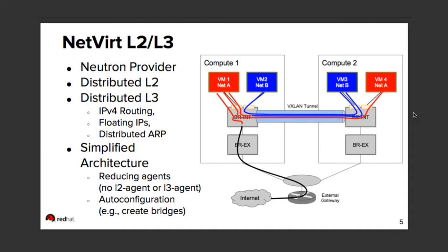The most common use case uses a VXLAN overlay; however, this network also supports VLANs and GRE tunneling. The flows allow, say, VM1 to talk to VM4 on the same network — that's all layer 2 switching, and it's all distributed. There are no agents involved, no layer 2 agent, no layer 3 agent. Communication goes directly from VM to the first OVS switch, directly to the last OVS switch and up to the VM. That's the red flows you see there; blue flows represent VM2 to VM3.